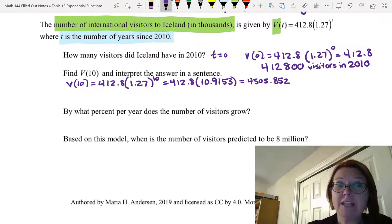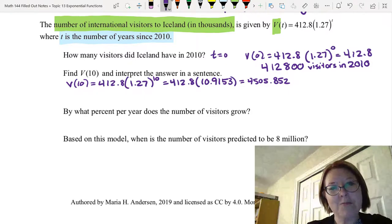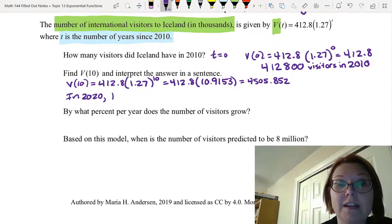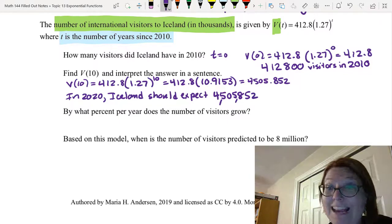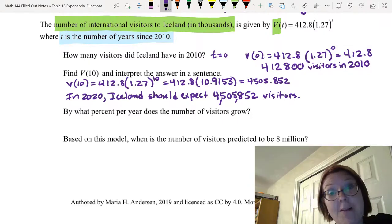So V(10) is 10 years since 2010. That would be 2020. The time I'm recording this video, that's in the future. So in 2020, Iceland should expect 4,505, and then I'm multiplying by 1,000, 852. So 4,505,852 visitors. That is a lot more visitors than 412,800.